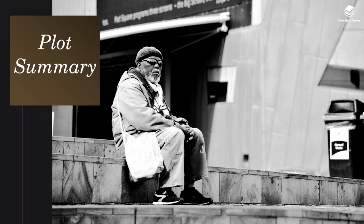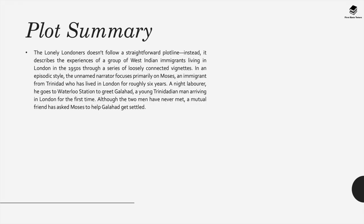The Lonely Londoners doesn't follow a straightforward plot line. Instead, it describes the experiences of a group of West Indian immigrants living in London in the 1950s through a series of loosely connected vignettes. In an episodic style, the unnamed narrator focuses primarily on Moses, an immigrant from Trinidad who's lived in London for roughly six years. He goes to Waterloo Station to greet Galahad, a young Trinidadian man arriving in London for the first time. Although the two men have never met, a mutual friend has asked Moses to help Galahad get settled.